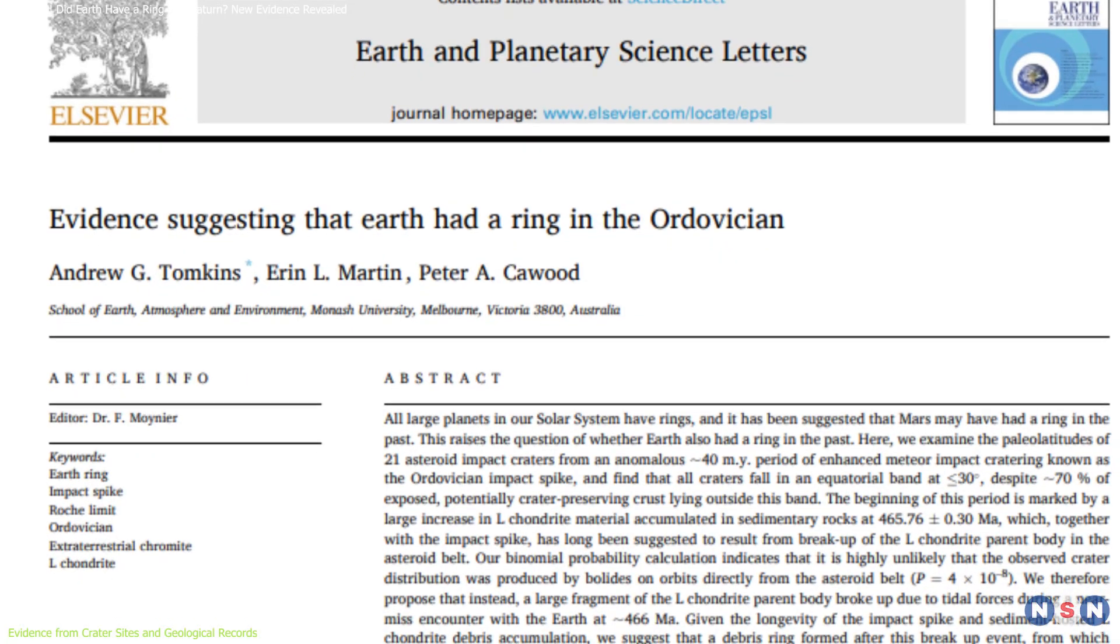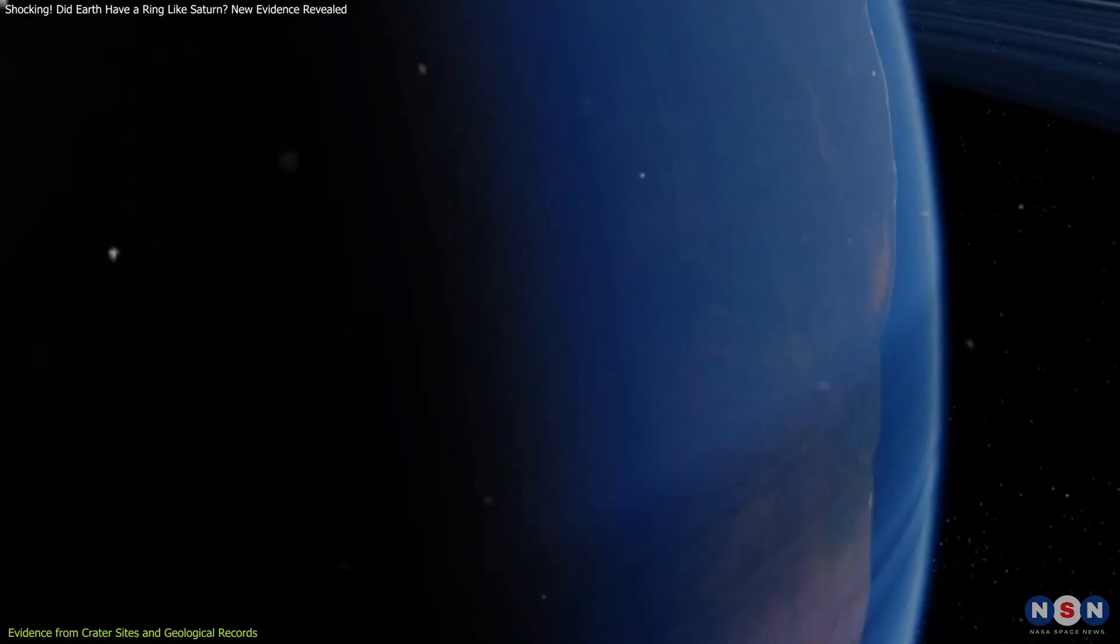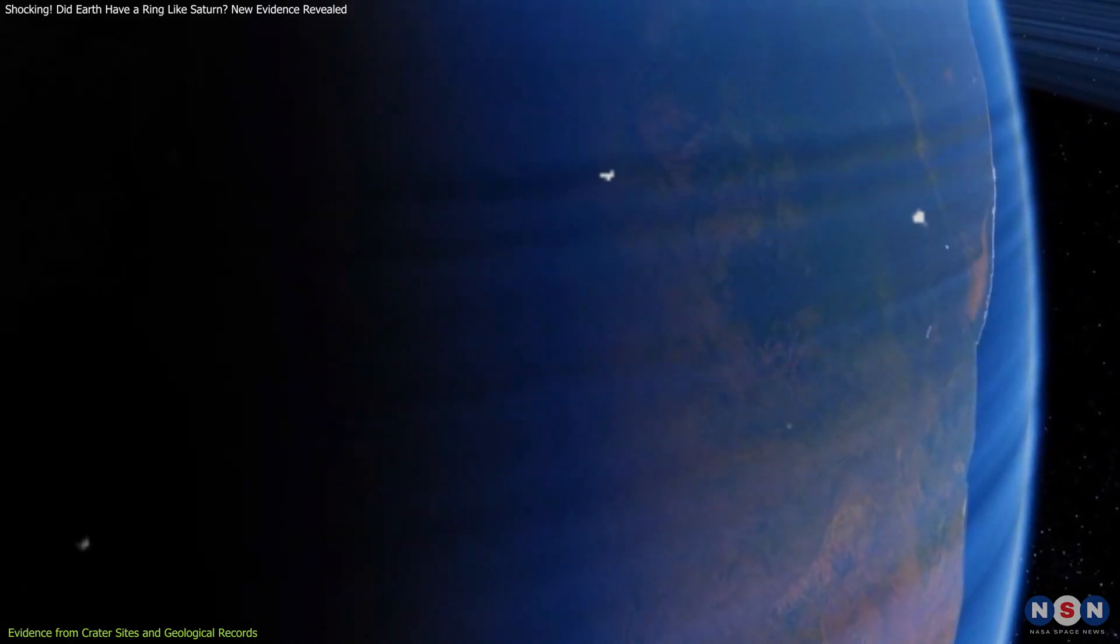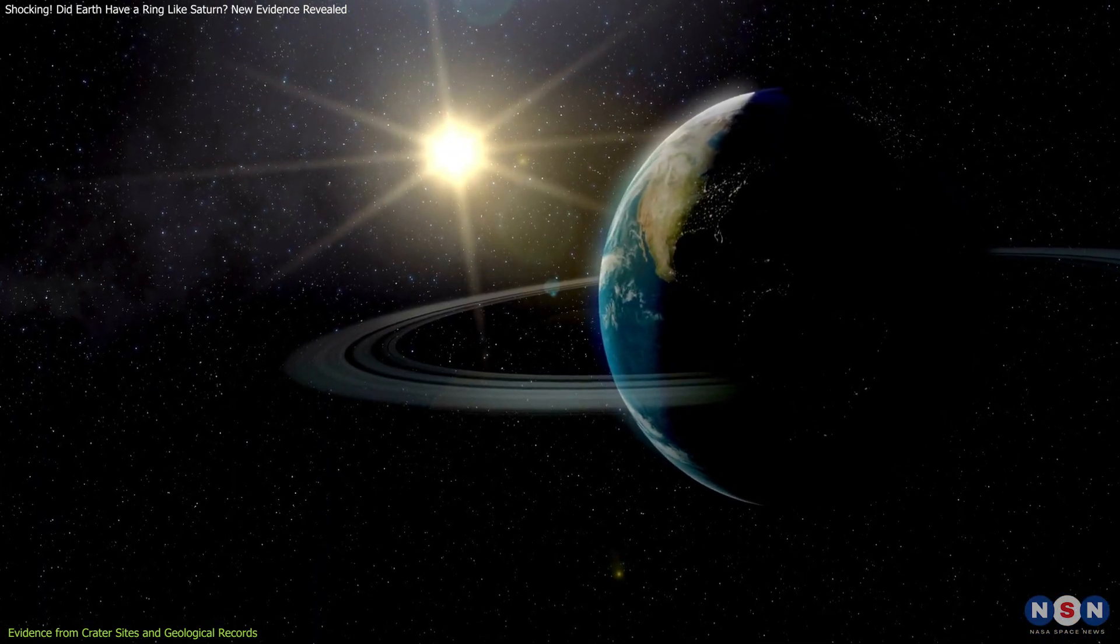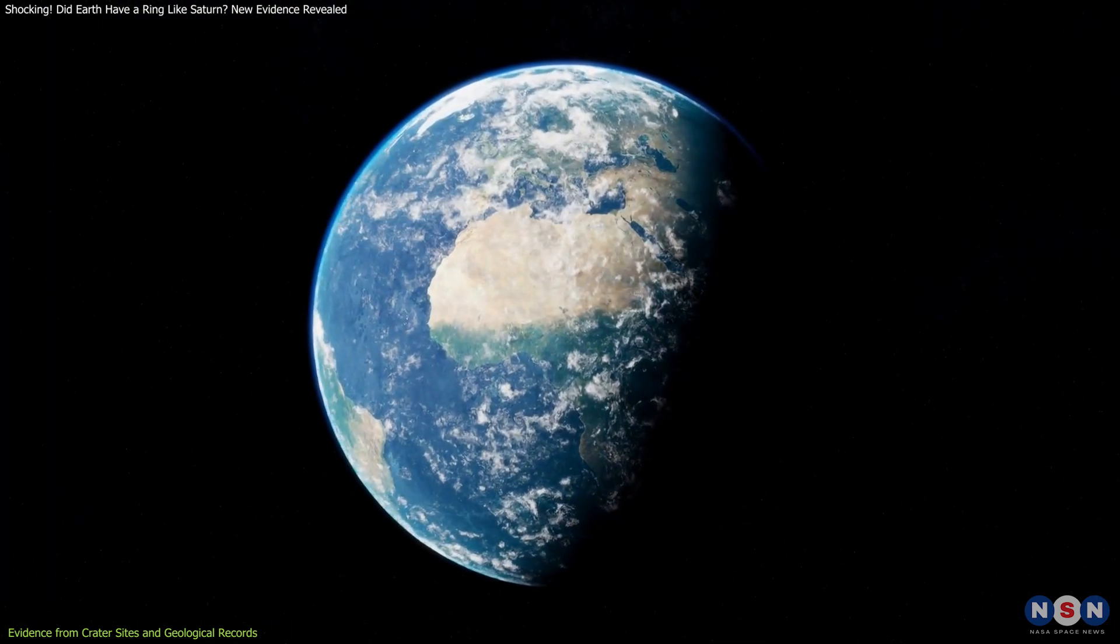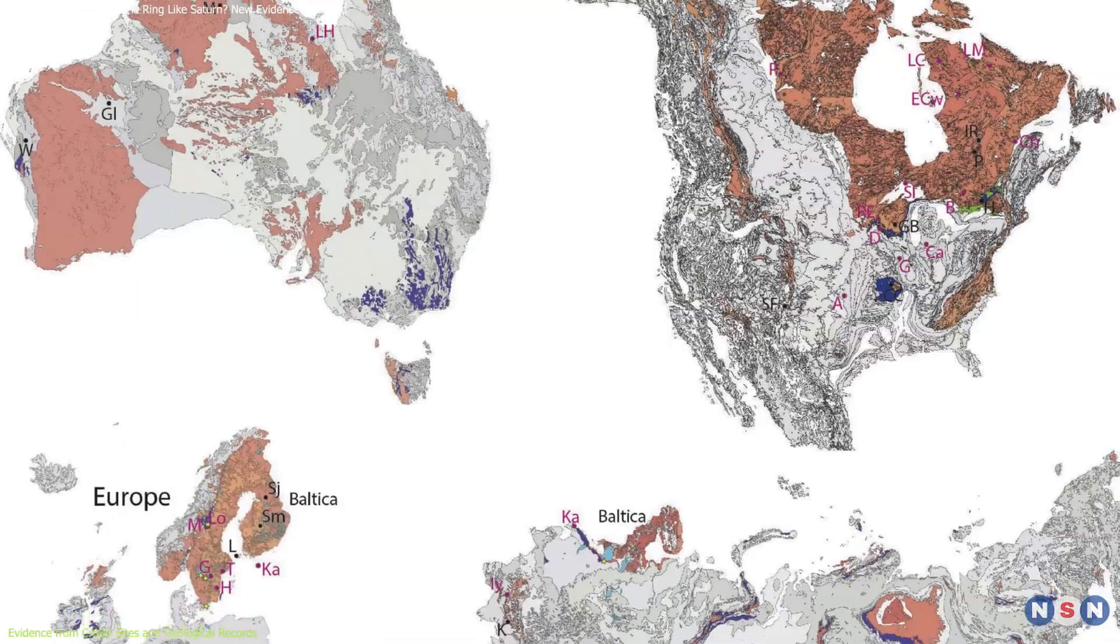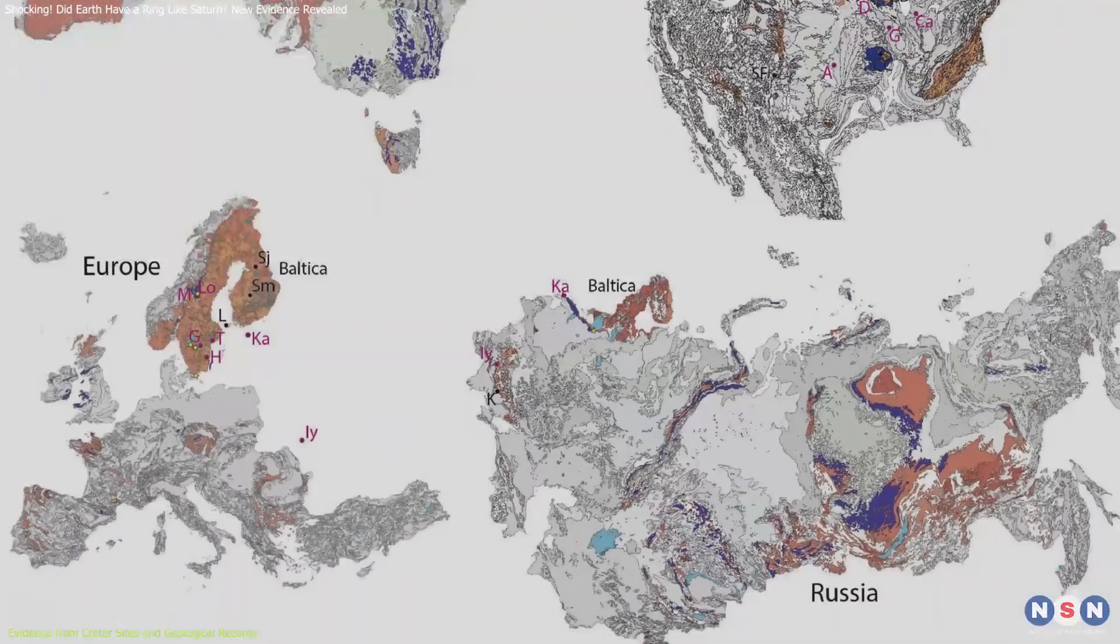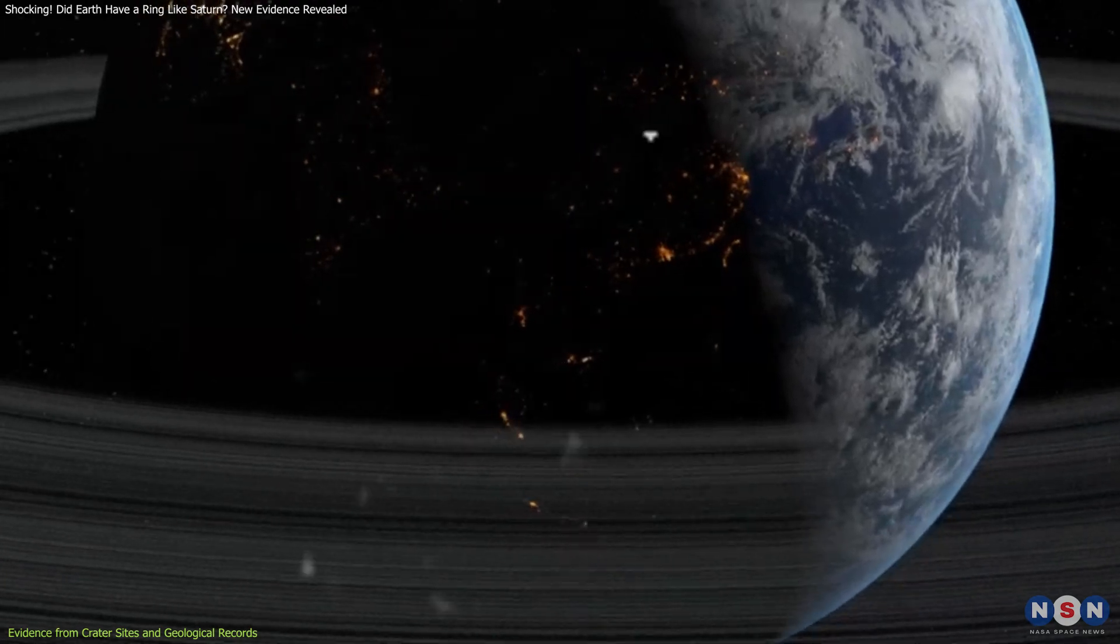Berger Schmitz, a researcher from Lund University, describes the hypothesis as a new and creative idea that explains some observations. However, he cautions that while the hypothesis is compelling, more concrete evidence is needed to confirm that Earth indeed had a ring. He suggests further investigation, including a detailed analysis of the identified crater sites and surrounding geological formations to look for unique markers that could definitely tie these craters to a ring-forming event.